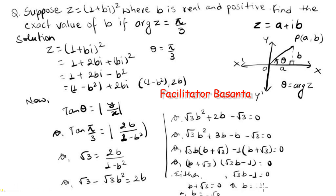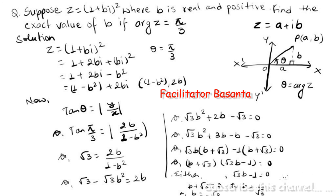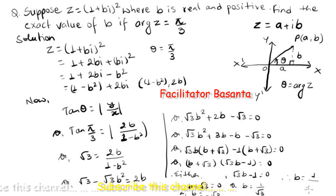Solving, we get b equals 1 divided by √3. Since the question states that b is a real and positive number, b equals minus √3 is excluded as it is negative. Therefore the value of b is 1 divided by √3.